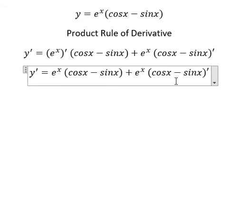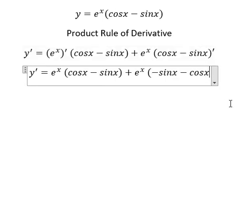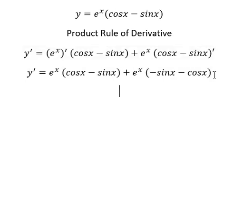First derivative of cosine s, you will get negative sine s. First derivative of sine s, you got cosine s. Now we need to simplify this one.